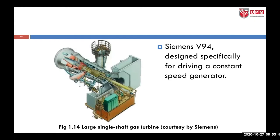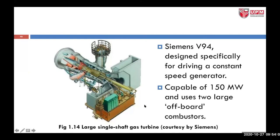This is another example of a land-based gas turbine, the Siemens V94, a large single-shaft gas turbine engine. It is designed for driving a constant speed generator capable of producing 150 megawatts. It uses large can-type combustors, and it is a closed cycle rather than an open cycle.